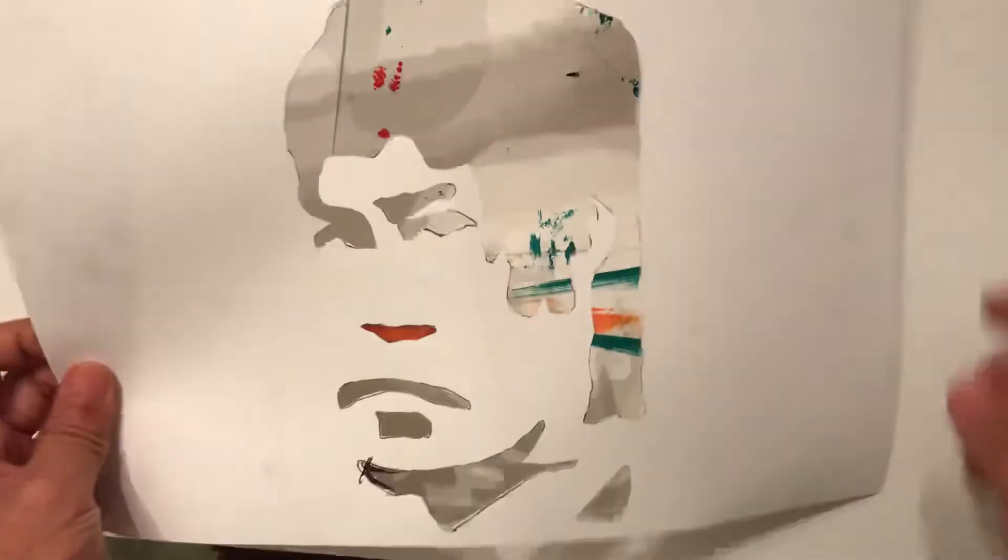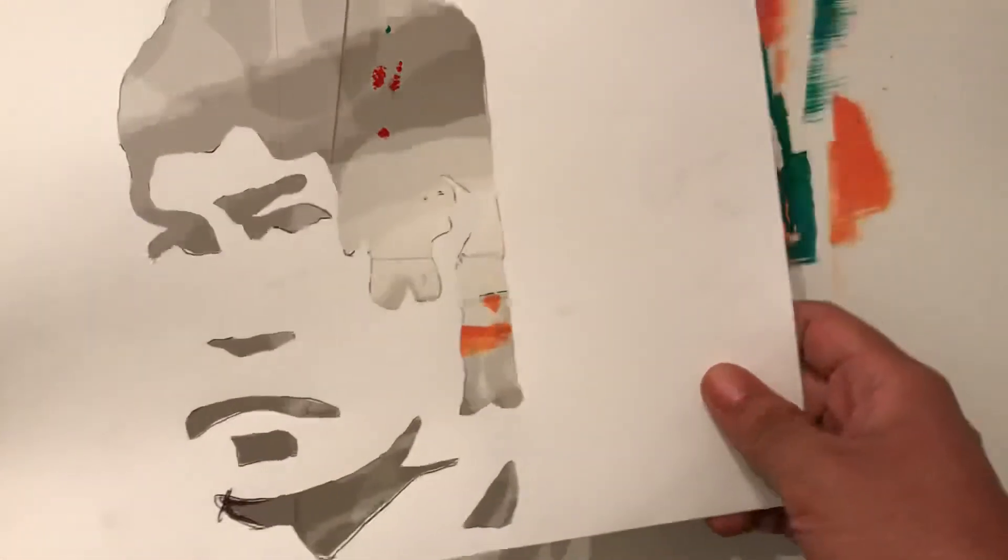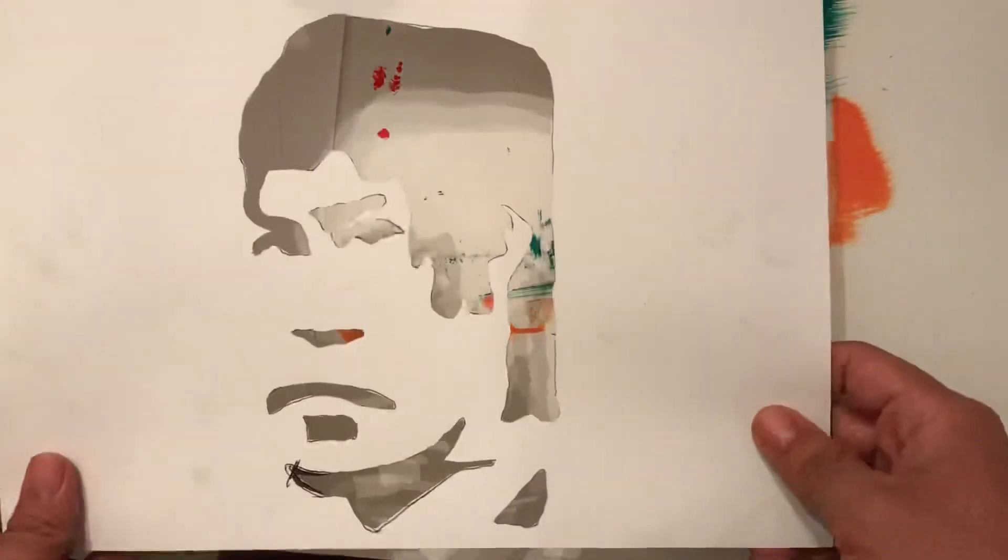We should start out with first figuring out what figure we want to incorporate into our artworks. So for this demonstration, I'm using Bruce Lee, and I already have a pre-cut stencil right here.